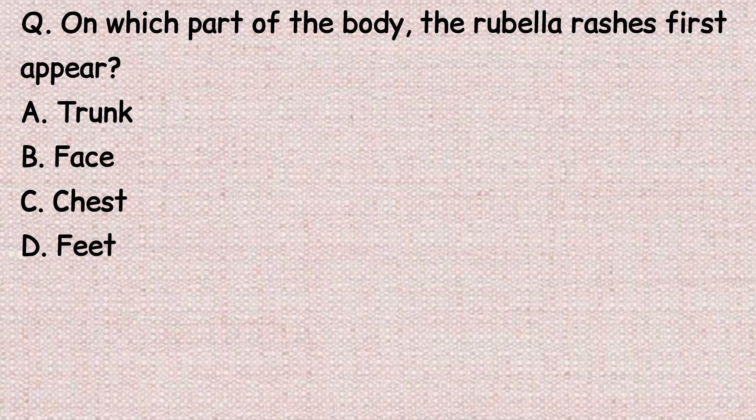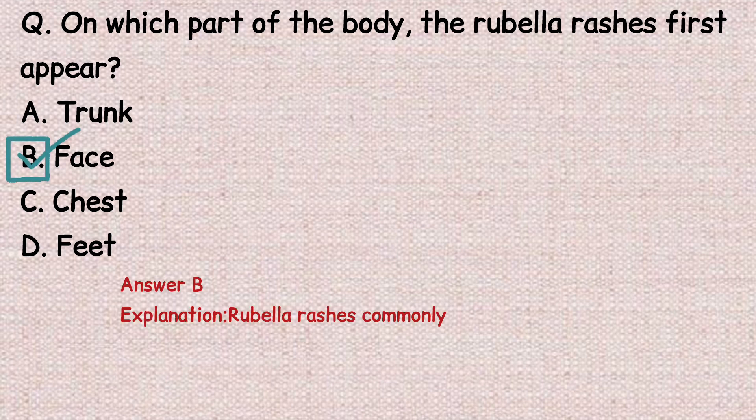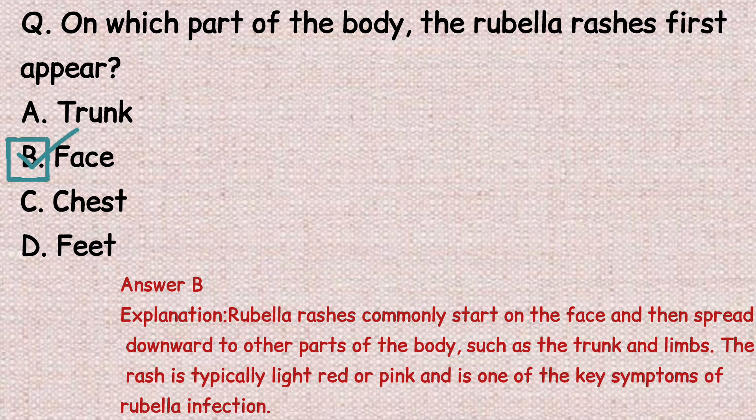The next question: on which part of the body do rubella rashes first appear? Option A: trunk. Option B: face. Option C: chest. Option D: feet. The correct answer is option B, face. Rubella rashes commonly start on the face and then spread downward to other parts of the body such as the trunk and limbs. The rash is typically light red or pink and is one of the key symptoms of rubella infection.